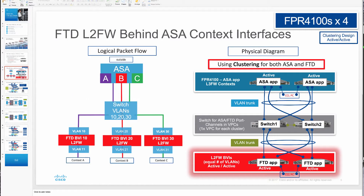In this demo, our setup has two clusters with these 4100s. We have an ASA cluster on top that runs with routed firewall contexts, and we have an FTD cluster on the bottom that runs with transparent firewall BVIs. The contexts and BVIs are matched up and stitched together using the Nexus 5000 pair of switches that run VPCs into both of these clusters. This setup allows us to do resiliency testing with our devices running through these contexts and BVIs.